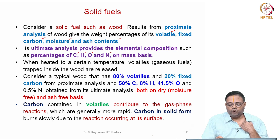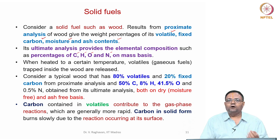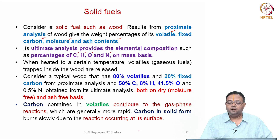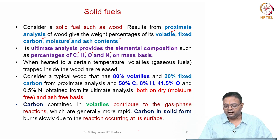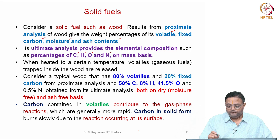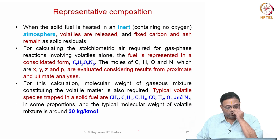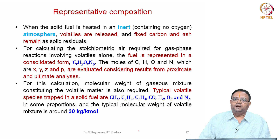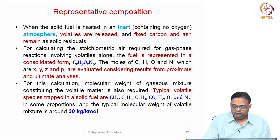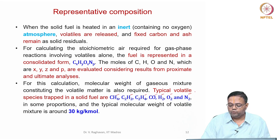Consider an example of wood where moisture and ash content are negligible. By proximate analysis it has 80% volatiles and 20% fixed carbon; by ultimate analysis it has 50% carbon, 8% hydrogen, 41.5% oxygen, and 0.5% nitrogen. The volatiles typically contain species like CH4, C2H2, C2H4, CO, H2, O2, N2, etc., determined by mass spectrometry or gas chromatography, though the composition may vary with heating rate.